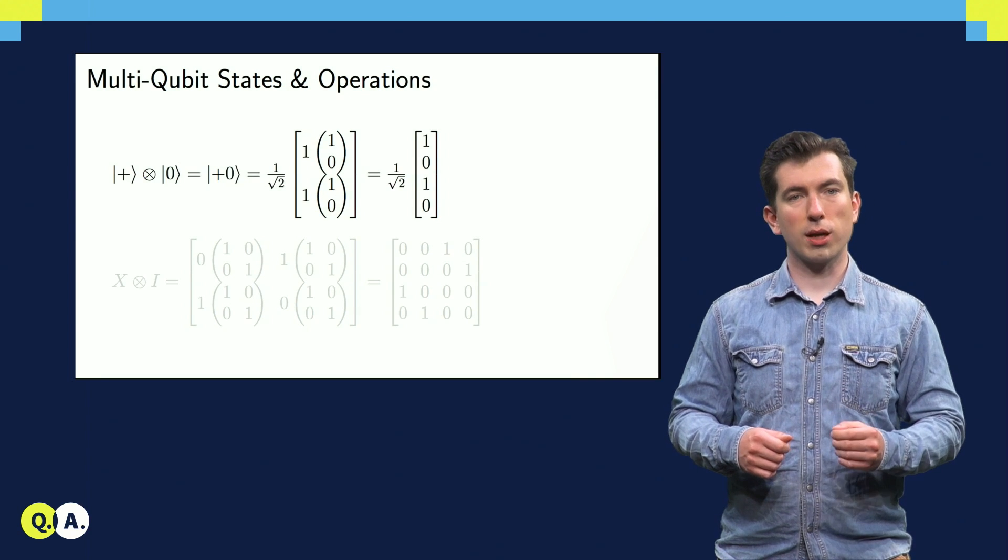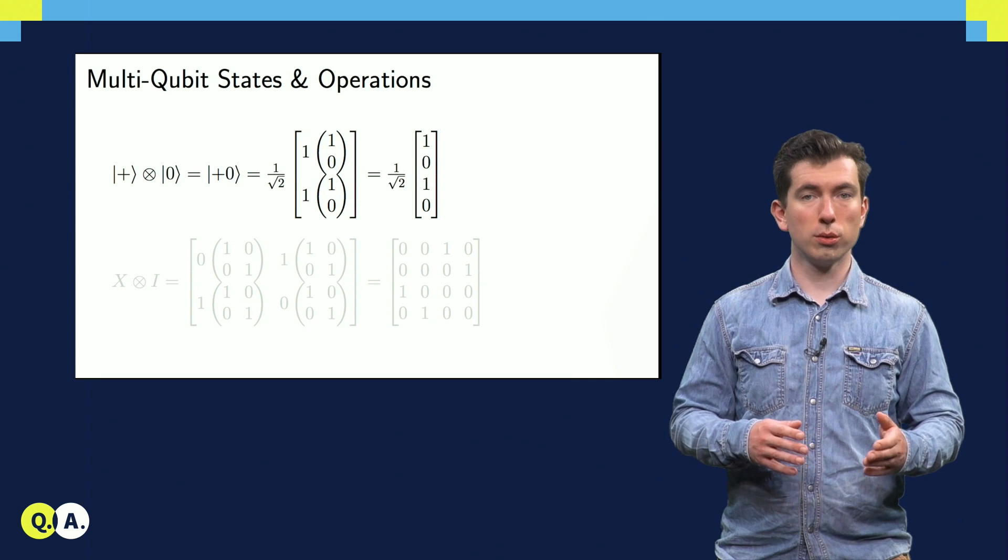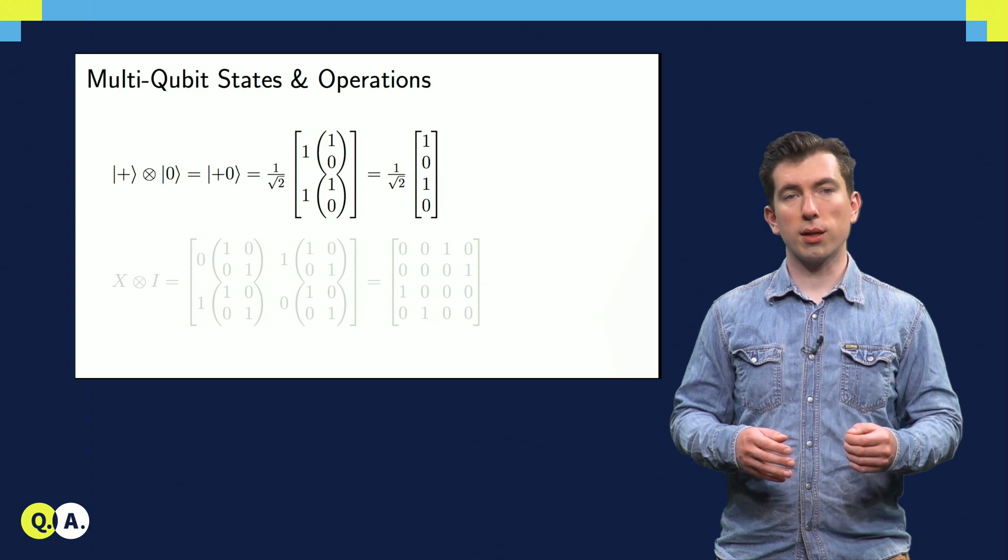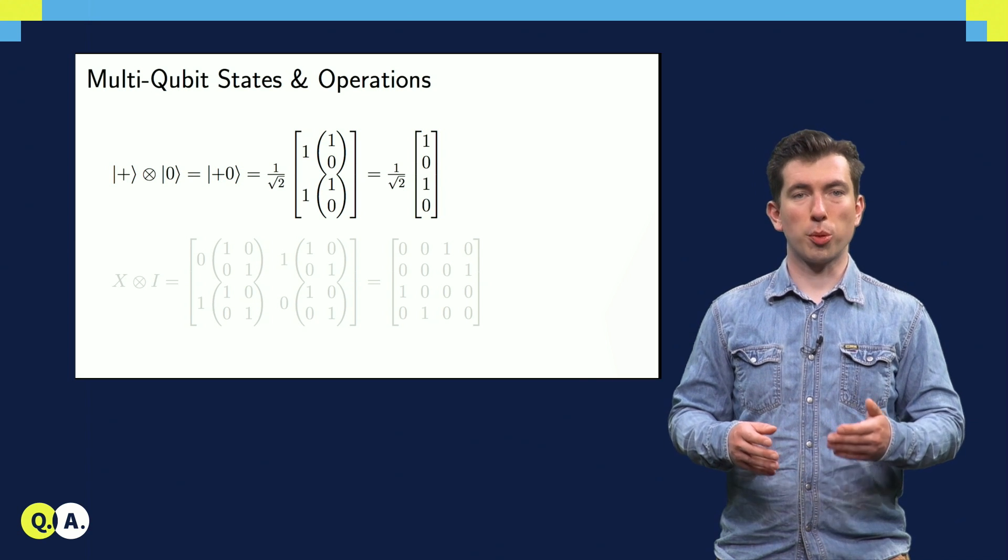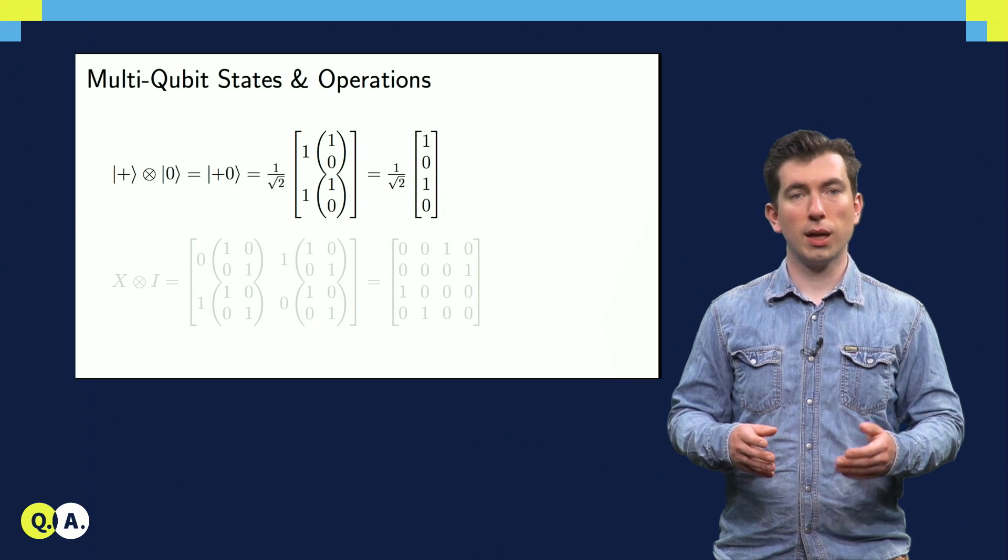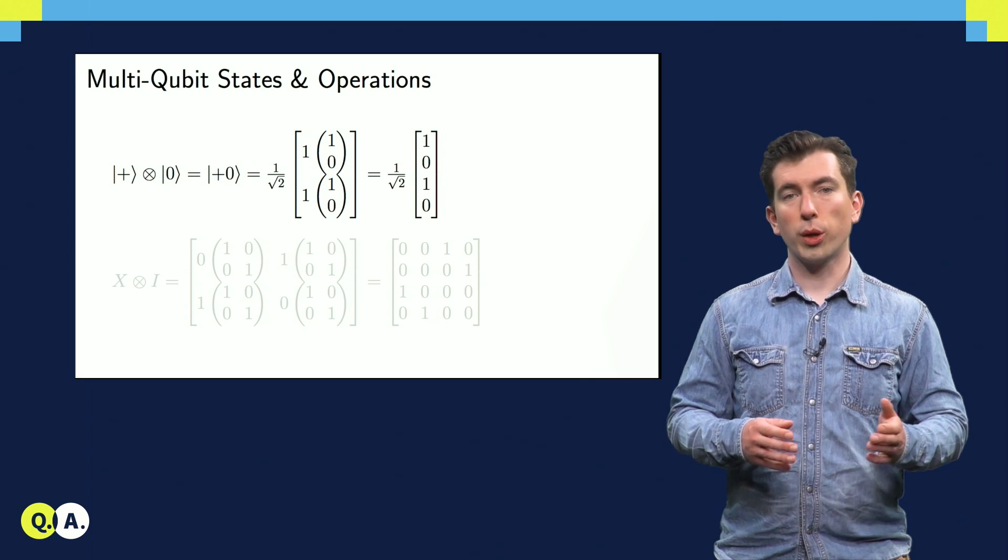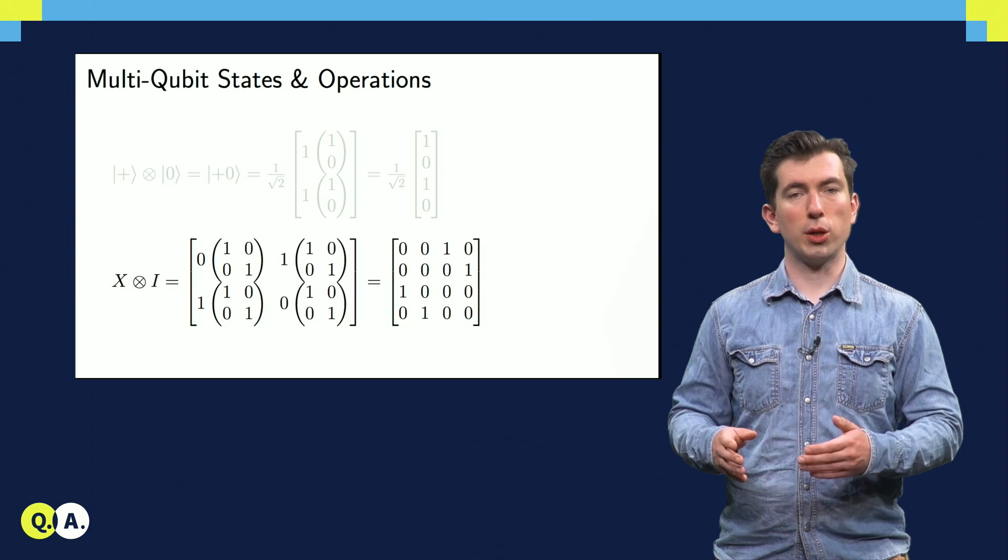Here, we see the tensor product of two states, plus and zero, resulting in a state which we often call plus zero. Each two-by-one block of the state vector we're calculating is proportional to the vector for the zero state, and it's multiplied by one of the elements of the plus state.